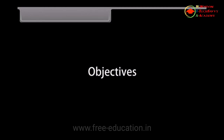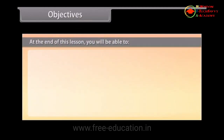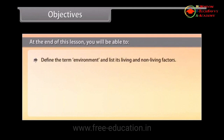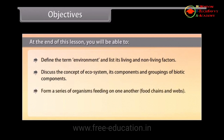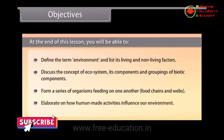Objectives: At the end of this lesson, you will be able to define the term environment and list its living and non-living factors, discuss the concept of ecosystem and its components and groupings of biotic components, form a series of organisms feeding on one another — food chains and webs — and elaborate on how human-made activities influence our environment.